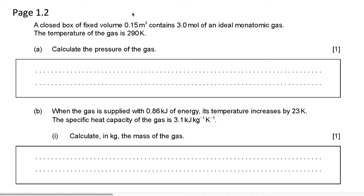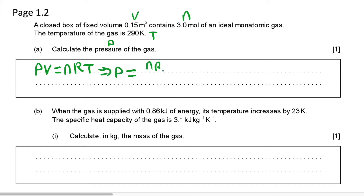So here we know the volume, we know the number of moles, we know the temperature, and we want to calculate pressure. So we can use the ideal gas equation: pressure multiplied by volume is equal to number of moles multiplied by the R constant multiplied by temperature. So pressure is going to be equal to nRT divided by volume.